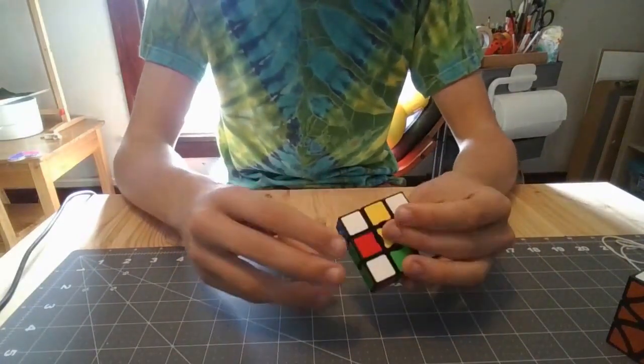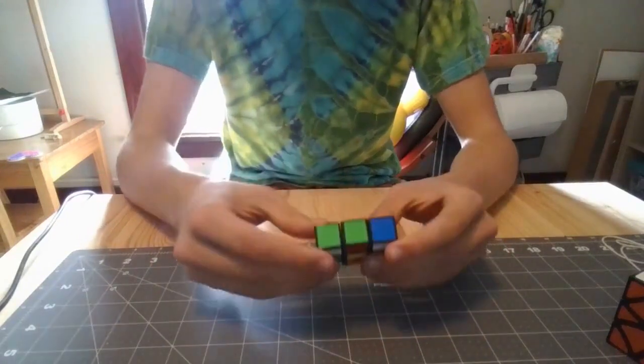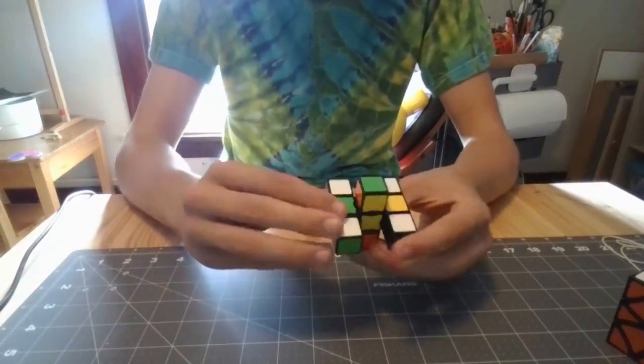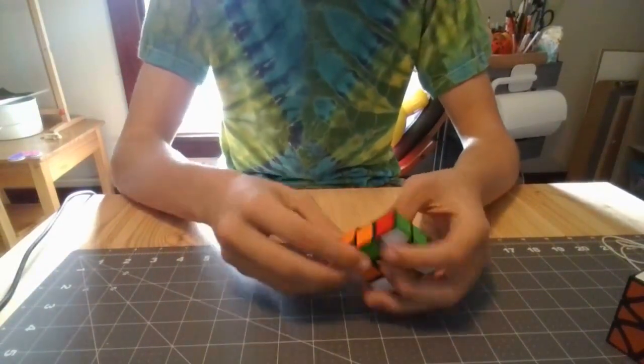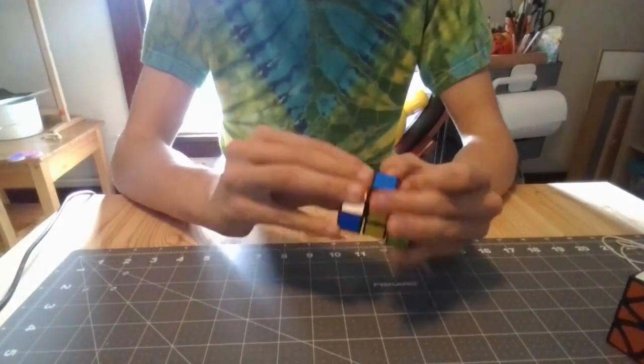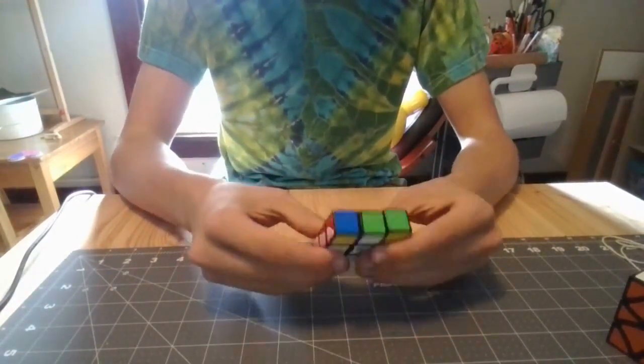And then it's just like solving a regular 3x3 where you have to get the white cross. But as you can see some of these pieces there is no white. So you're going to have to take that out and individually rotate it. And then move that up. And then there's the white side.